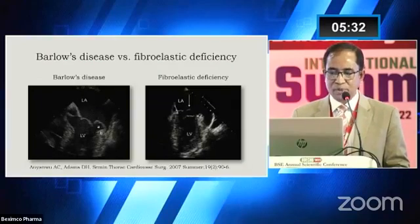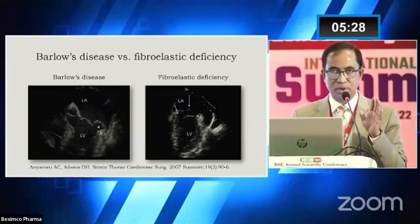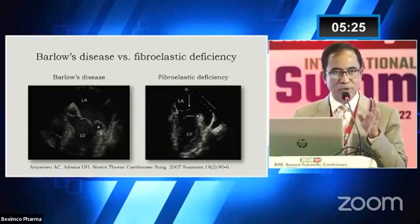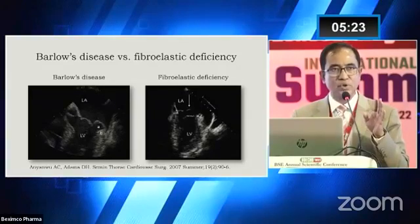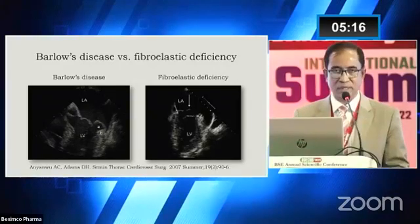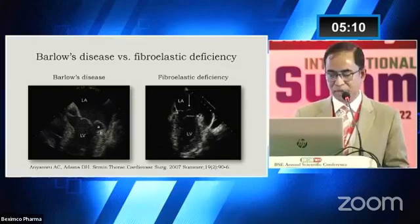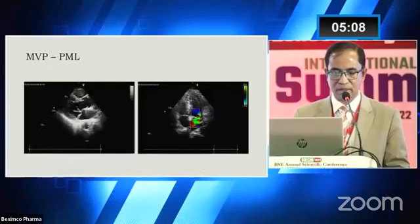Barlow's disease and fibroelastic deficiency are the two entities that constitute what is called degenerative MR. In Barlow's disease, there is marked thickening of the leaflets and multiple segmental prolapse. In fibroelastic deficiency, the segments are usually thinned out and there is deficiency of the elastic tissue as a whole.